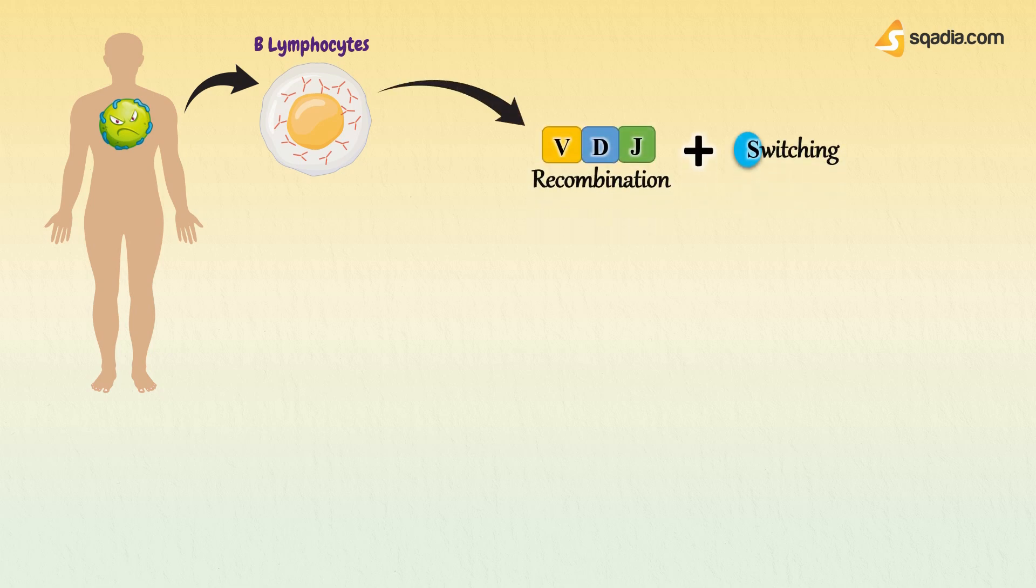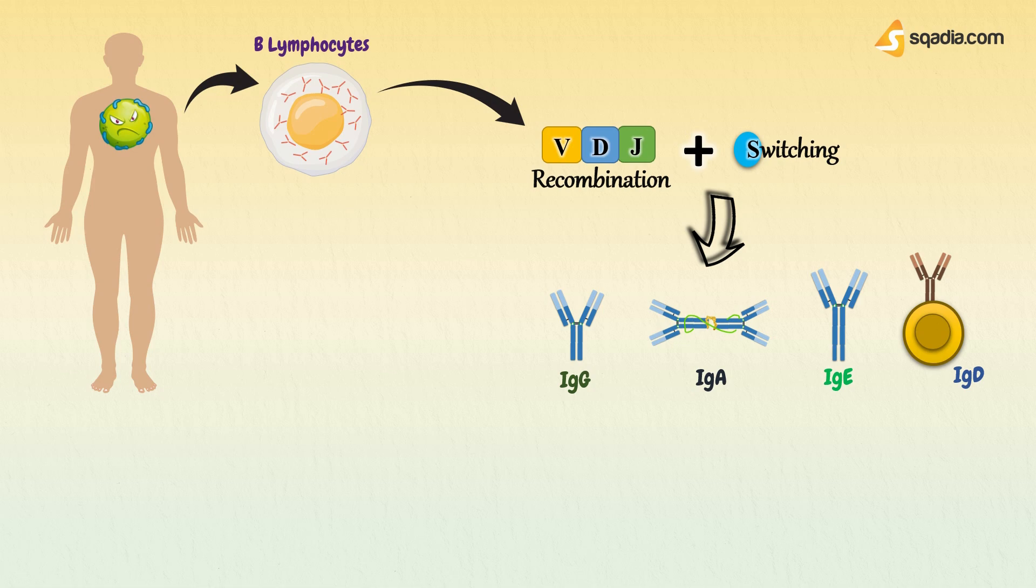But once an antigen invades the body, B cell has to produce specific antibody against that. Once it gets activated and T cell confirms the foreign antigen, then it has to produce antibody accordingly. Here together with different VDJ recombinations that are taking place simultaneously, this switching will continue. And it will produce IgG, IgA, IgE, and membrane-bound IgD, along with IgM as well.